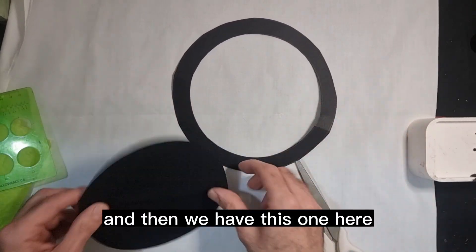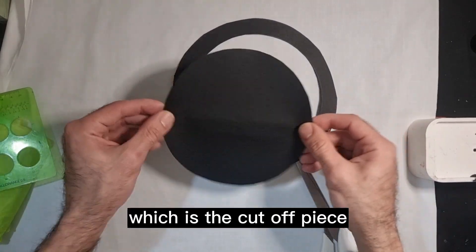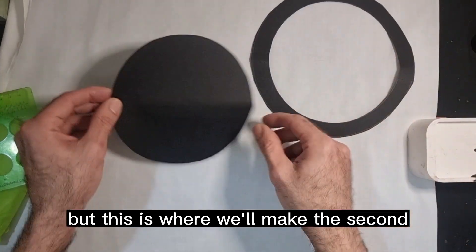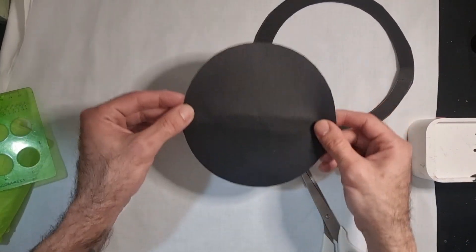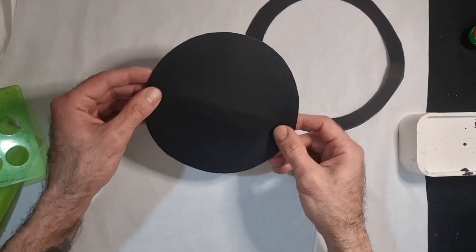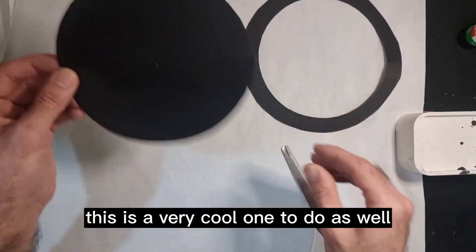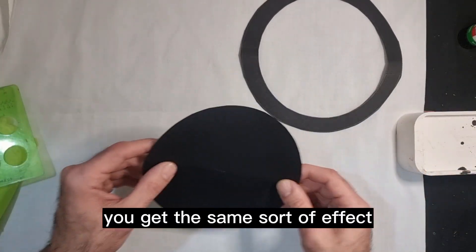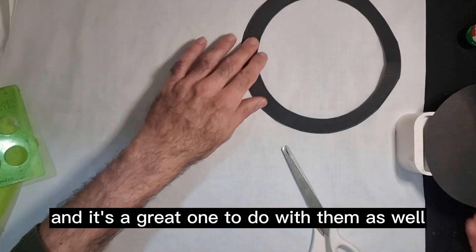So now we have our outer edge circle, so we've got one template there. And then we have this one here which is the cut off piece. Now normally you could just throw that away, but this is where we'll make the second one. We'll use this one to make our second stained glass window. This is a very cool one to do as well. You get the same sort of effect and it's a great one to do with them as well.